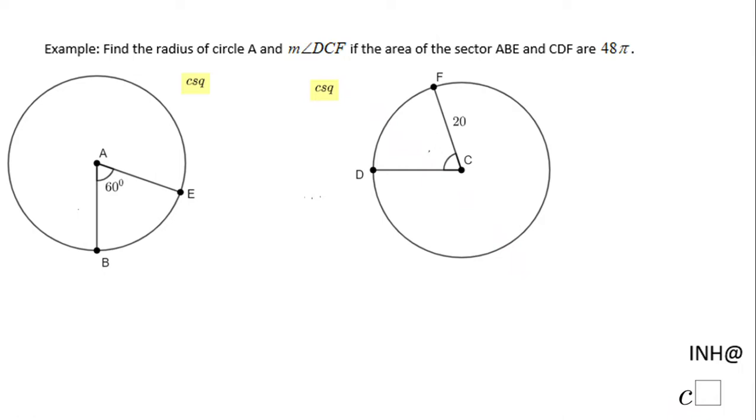Welcome or come back to iHelp at C squared. In this example, we need to find the radius of circle A. This is circle A - we notice the center here at A. We also need the measure of angle DCF, which is in the other circle, circle C, if the area of the sector ABE and CDF are 48π.